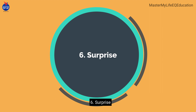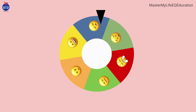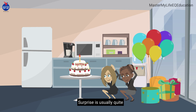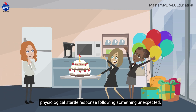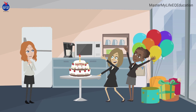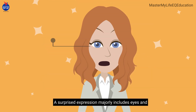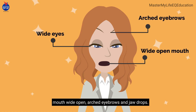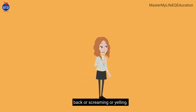Surprise is usually quite brief and is characterized by a physiological startle response following something unexpected. A surprised expression majorly includes eyes and mouth wide open, arched eyebrows, and a jaw drop. Physical responses can include jumping back, screaming, or yelling.